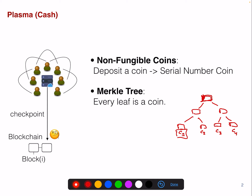When a user comes and deposits one coin, that coin gets added to the Merkle tree. This particular coin C5 can then be sent to another peer through this centralized operator.